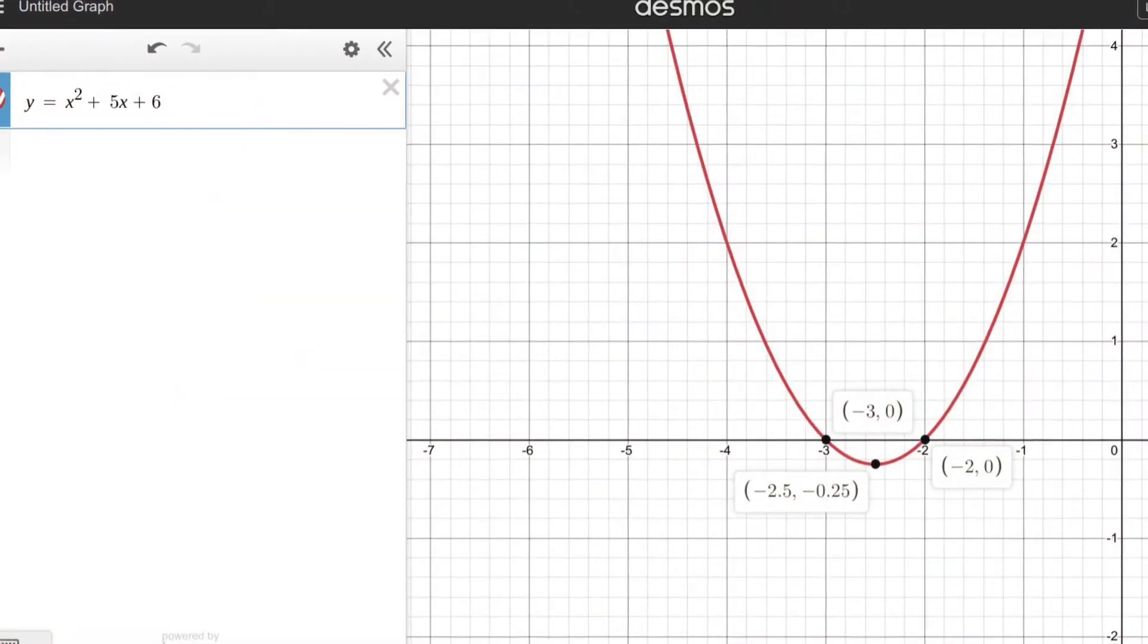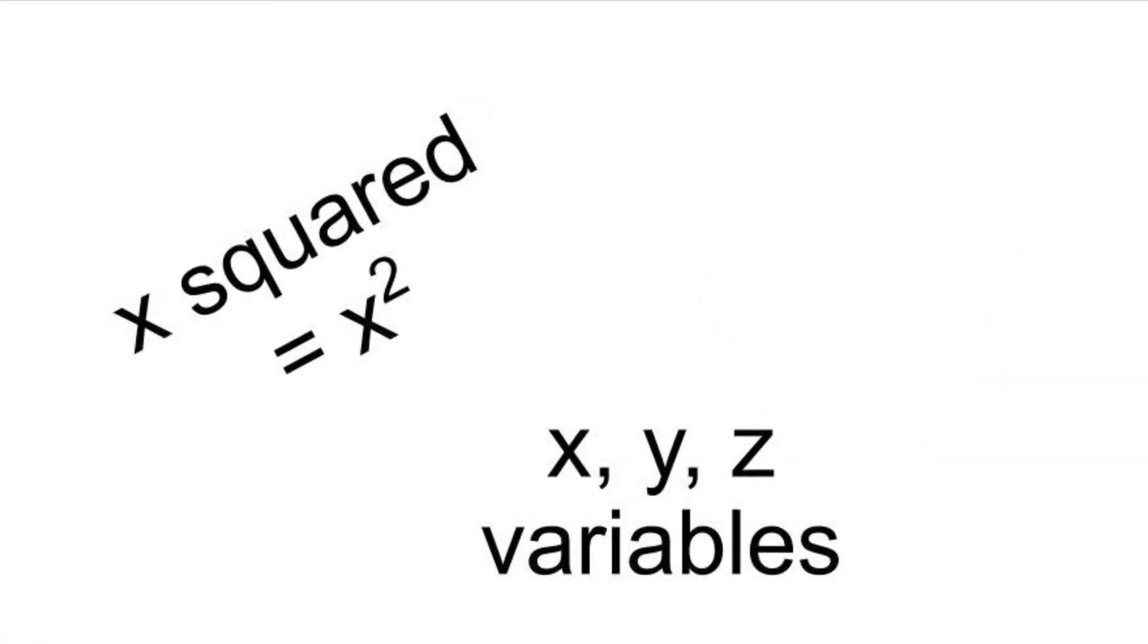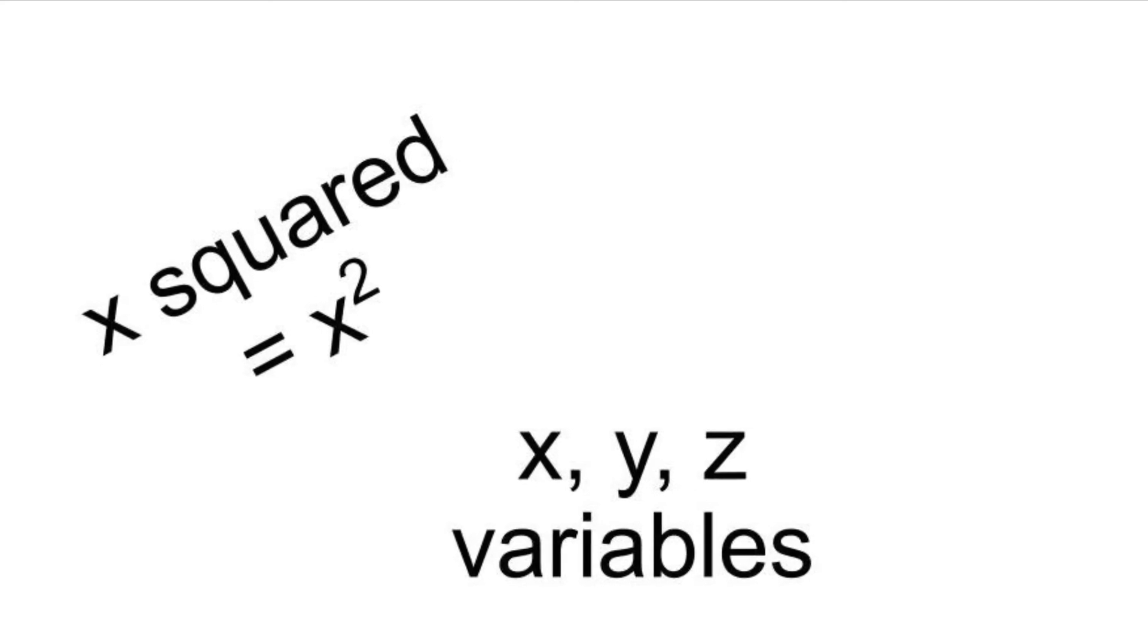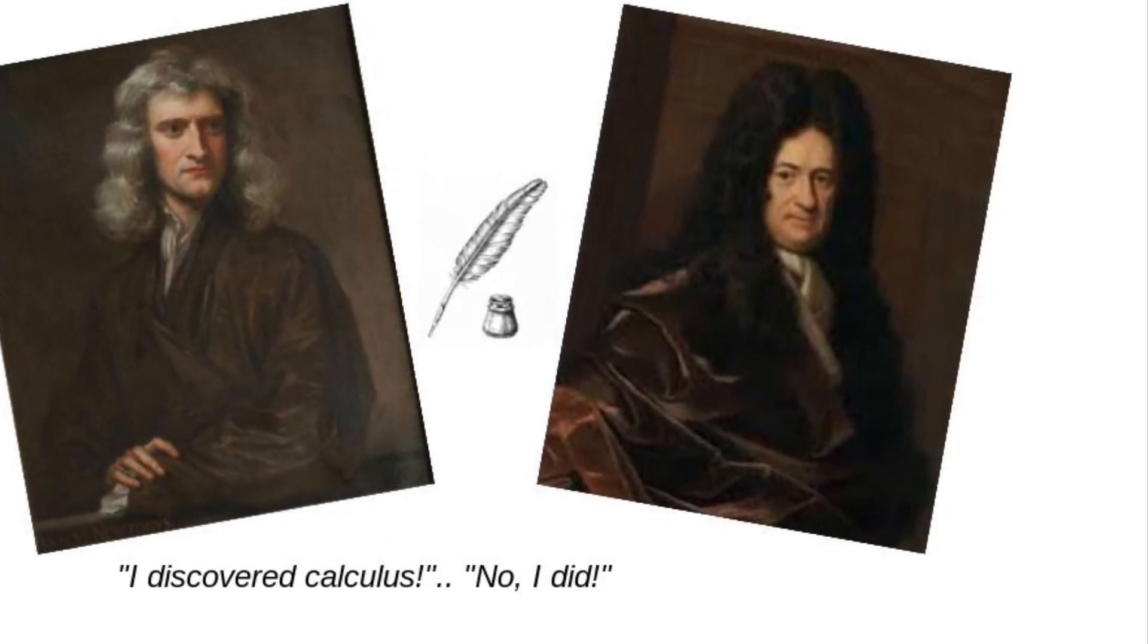Even in the algebraic notation, Descartes introduced the use of letters like x, y and z for variables or unknowns and superscripts for x squared. His discoveries laid the foundation for Newton and Leibniz's work on calculus.